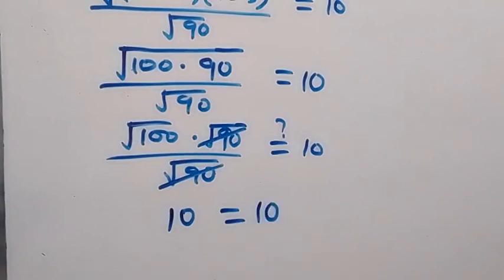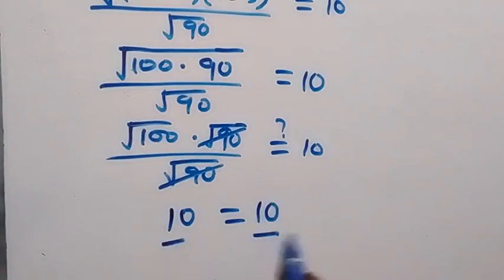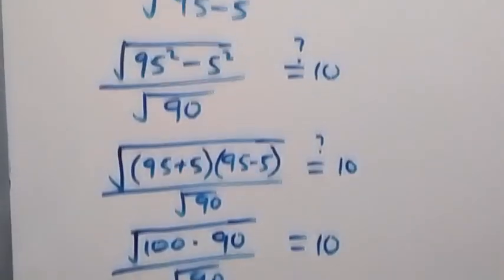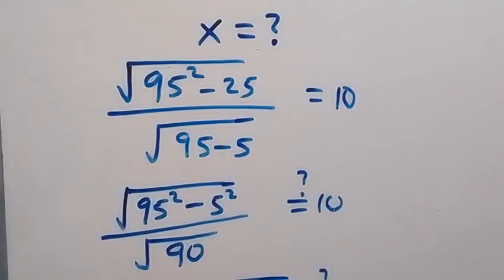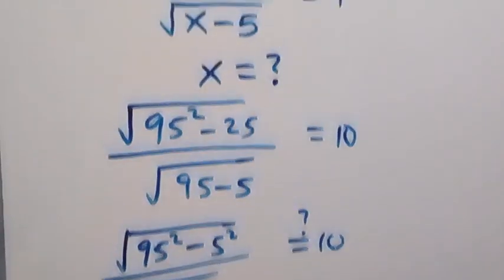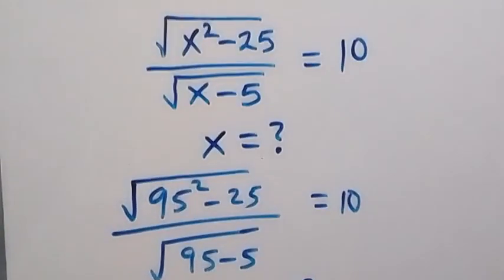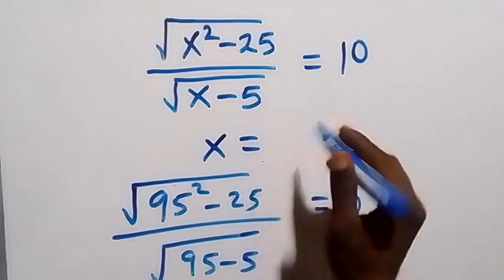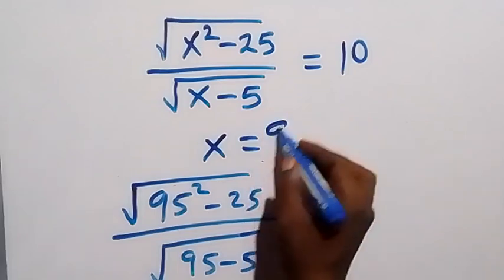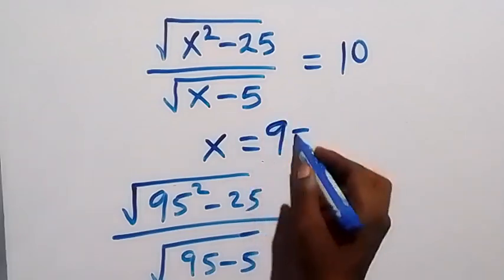The left hand side equals the right hand side. We can therefore conclude that the value of x in this given problem is x equals 95.